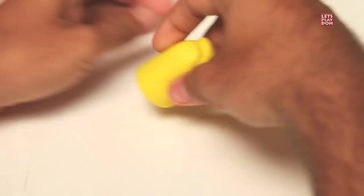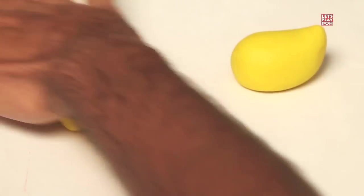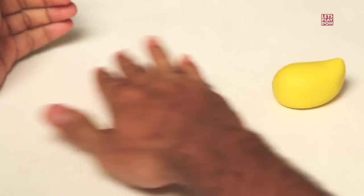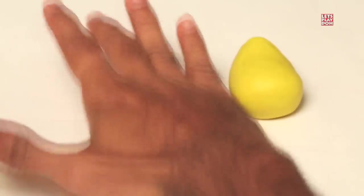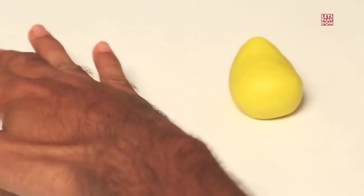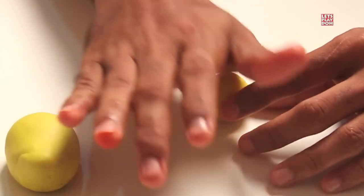Now we're going to take some more yellow play-doh. I would say about a third of what you took before. Now roll this between your hands. And now on a flat surface, you can press down with your palm and make a nice, even, circular motion.